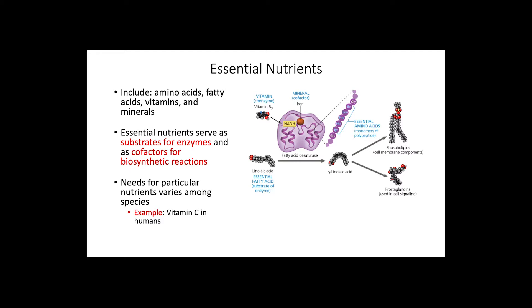Each animal species requires particular nutrients, and therefore not all essential nutrients are the same for all species. An example is vitamin C in humans, which is required but cannot be synthesized like it is in other species.